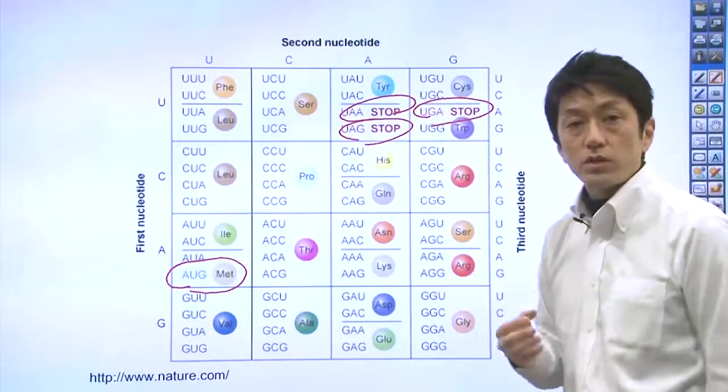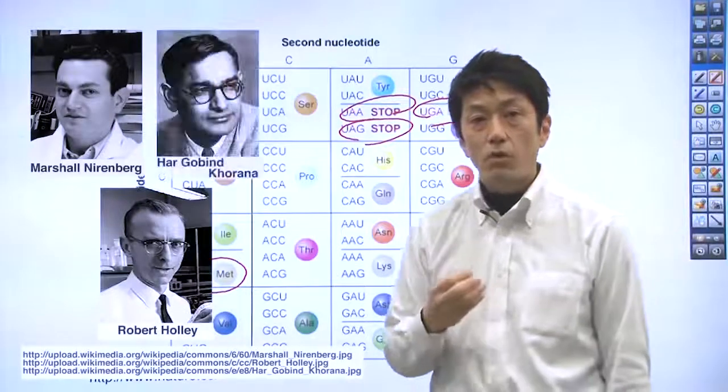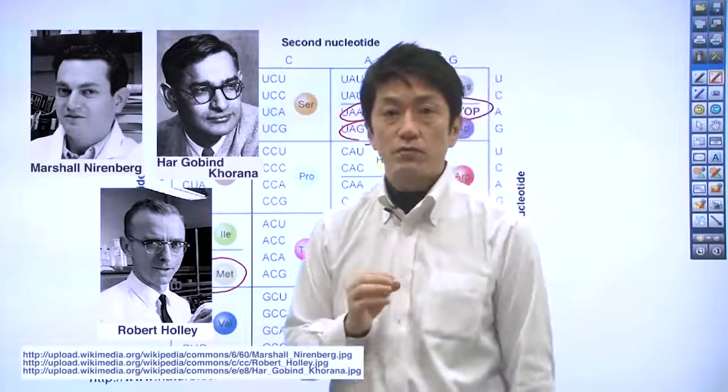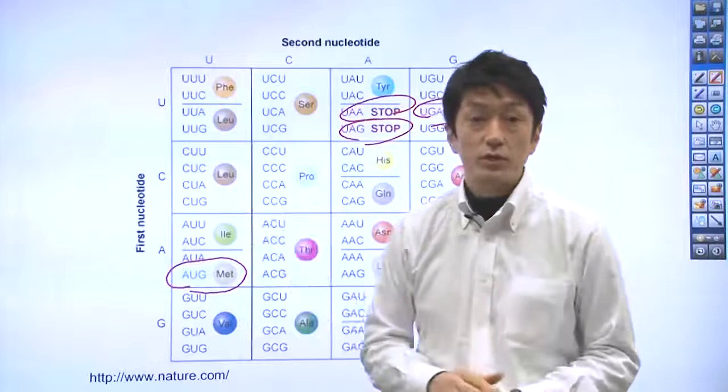Drs. Marshall Nirenberg, Robert Holley, and Har Gobind Khorana shared the 1968 Nobel Prize in Physiology or Medicine for this interpretation of the genetic code.